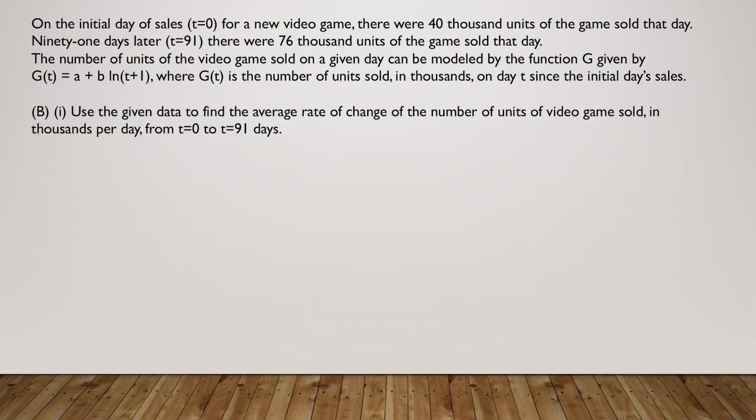Now in part B subpart 1, they want us to use the given data to find the average rate of change of the number of units of video game sold in thousands per day from t equals 0 to t equals 91 days. Now we know that the average rate of change is change in y upon change in x. The corresponding y points would be G(91) minus G(0) upon the respective x points, which would be 91 minus 0. We know G(91) was 76 and G(0) was 40, and 91 minus 0 is 91. So this is 36 over 91.